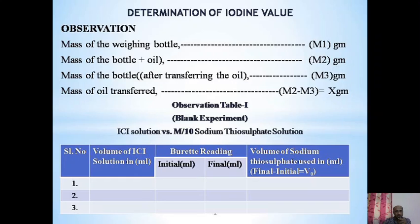The ICl solution is titrated after adding starch solution as an indicator, against M/10 sodium thiosulphate solution. Before starting the titration, record the initial burette reading. After titration, record the final burette reading. Final minus initial gives the volume of sodium thiosulphate used. Take three readings and divide by three to get the average volume of sodium thiosulphate for the blank titration.